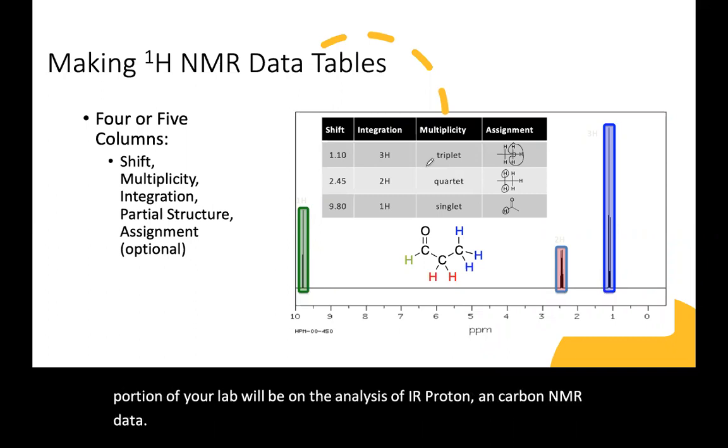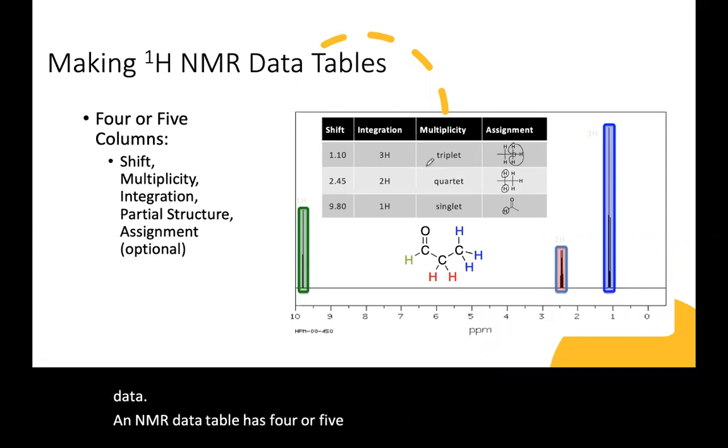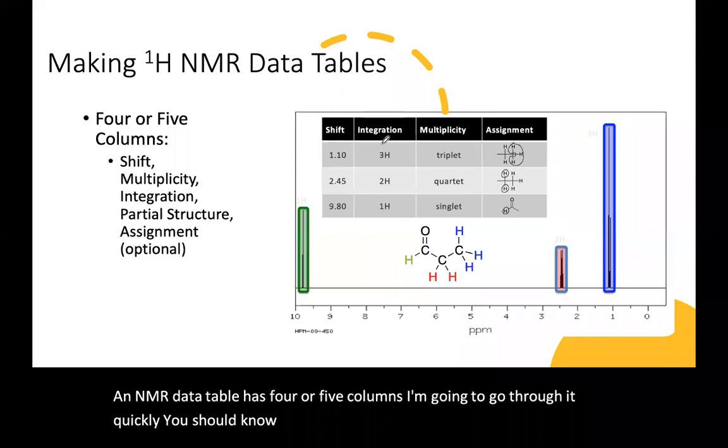So an NMR data table has four or five columns. I'm going to go through it quickly. You should know what shift is. That's the chemical frequency at which the peaks show up.